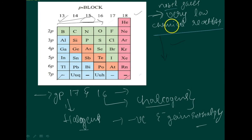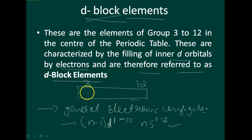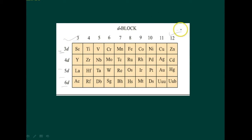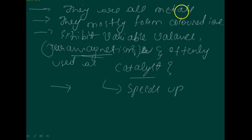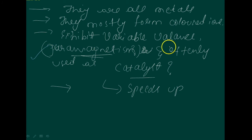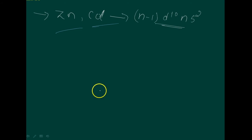The last group in p-block indicates noble gases, having very low chemical reactivity. Group 17 is called halogens and group 16 are called chalcogens. D-block elements are the elements of groups 3 to 12, characterized by filling of inner d orbitals. They are all metals, mostly form colored ions, exhibit variable valence and paramagnetism, and are often used as catalysts.